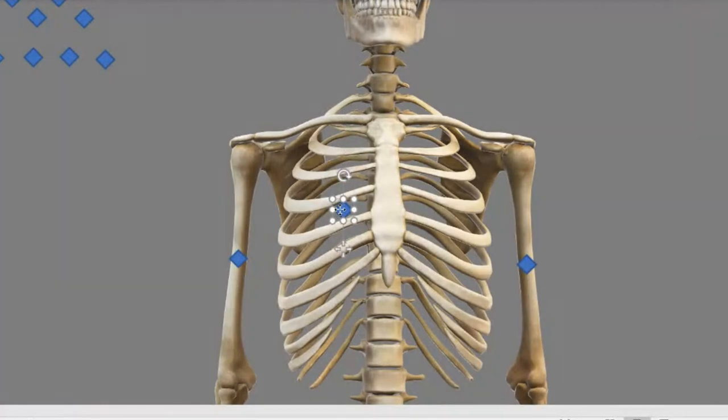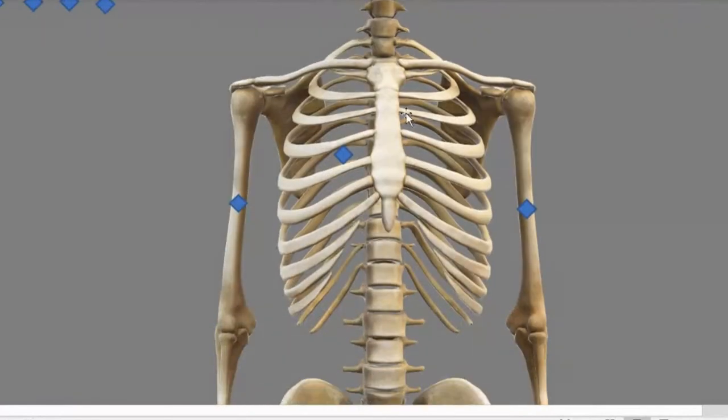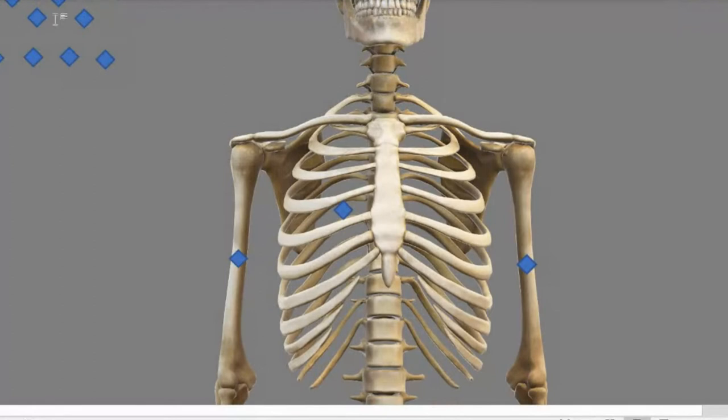So you're going to place that on the fourth intercostal space on the right side of the patient. Remember, your heart sits naturally a little bit more to the left rather than the right. So you're really going to be placing most of these electrodes on the left side of the body. V2 is pretty simple to remember because that's the fourth intercostal space on the left side.